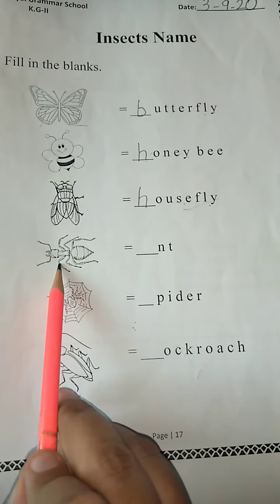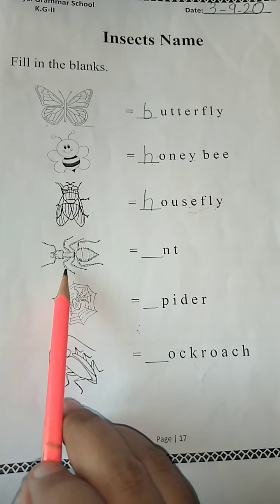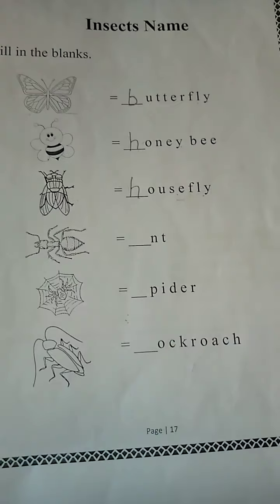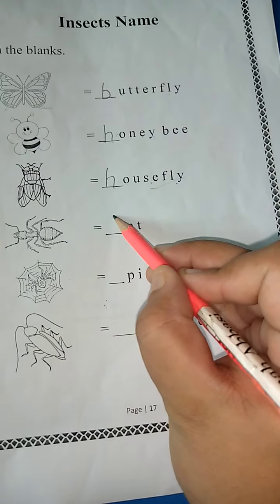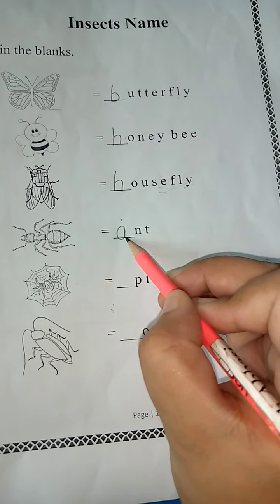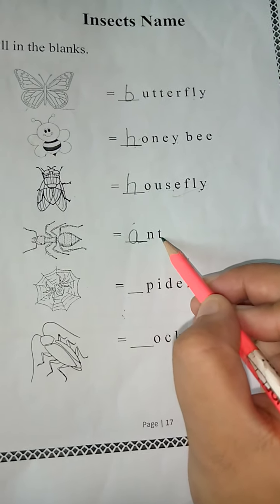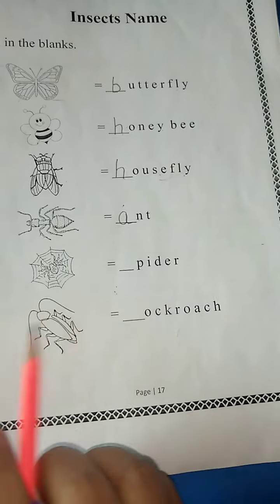So class KG2, this is ant. Ant. Whose sound do we hear? A. So I am going to write A here — small. A-N-T. Ant. Very good.